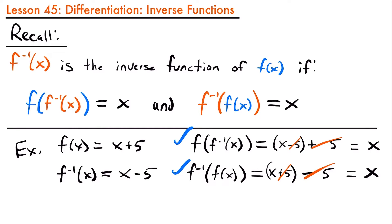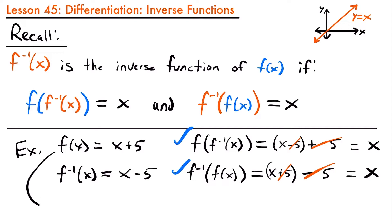A few more things to note about inverse functions: if you graph a function and its inverse, they are symmetric about the line y equals x. As a result, ordered pairs for a function and its inverse are reversed. For example, for f of x equals x plus 5, plugging in x equals 1 gives 1 plus 5 equals 6, so the point is (1, 6). For the inverse function, we swap the values to get (6, 1). This will be important to remember when we look at an example later.